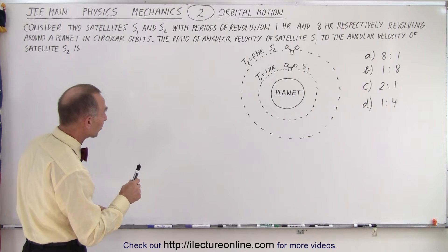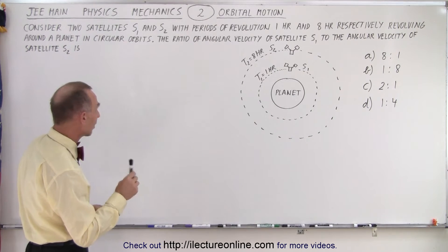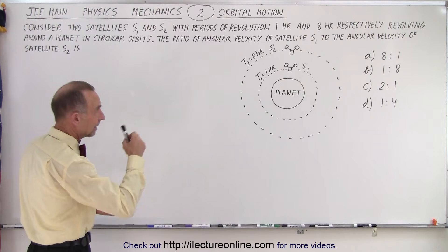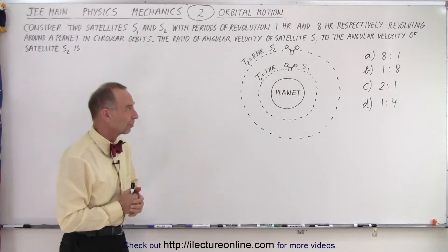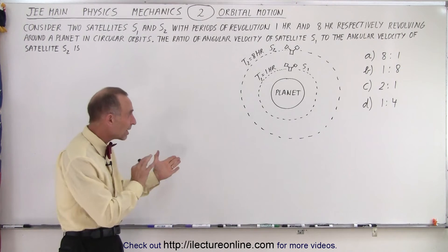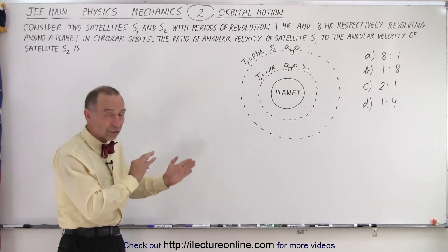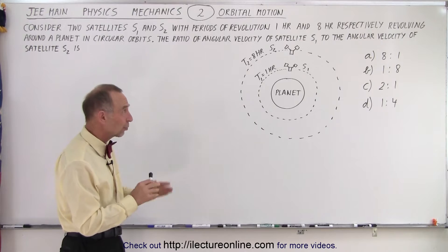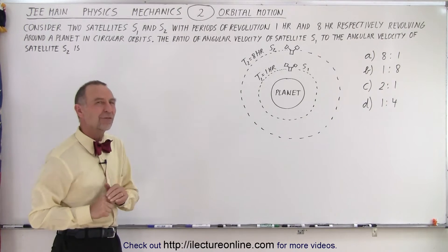The ratio of angular velocity of satellite S1 to the angular velocity of S2 is? And there are 4 possible answers. Now you might say, well since the ratio of the period is 1 hour and 8 hours, the ratio of the angular velocity may be that as well. Maybe, maybe not. Let's find out.